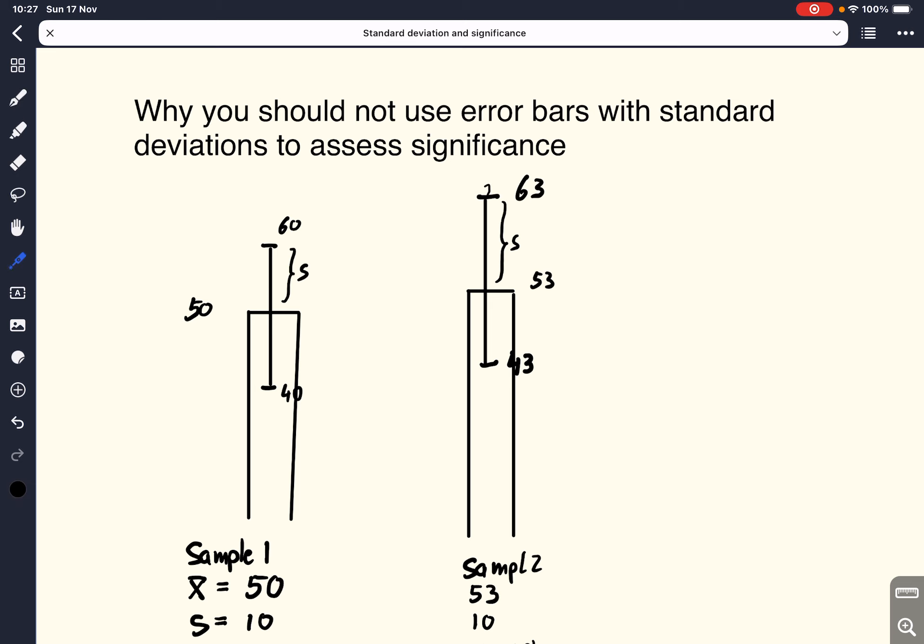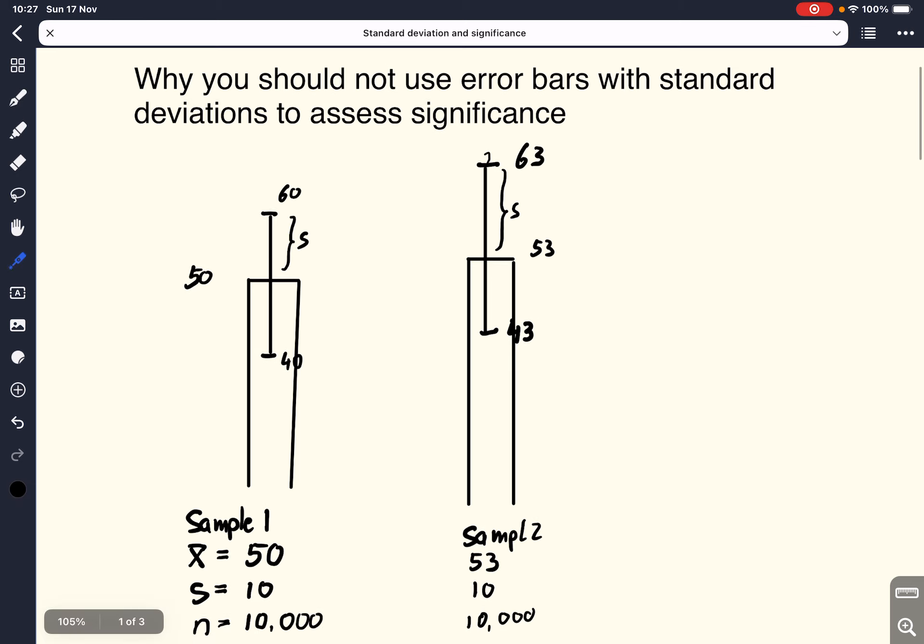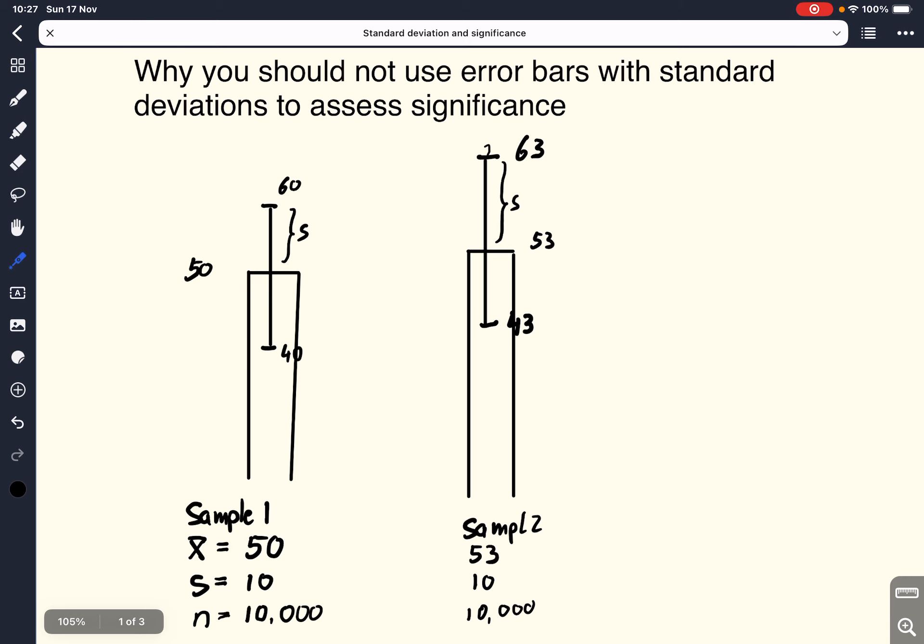So let's assume we have two samples here. Sample one has a sample mean of 50, whatever this 50 is. So that's indicated here. We have a standard deviation of 10 and we have a very large sample set. We have 10,000 observations.